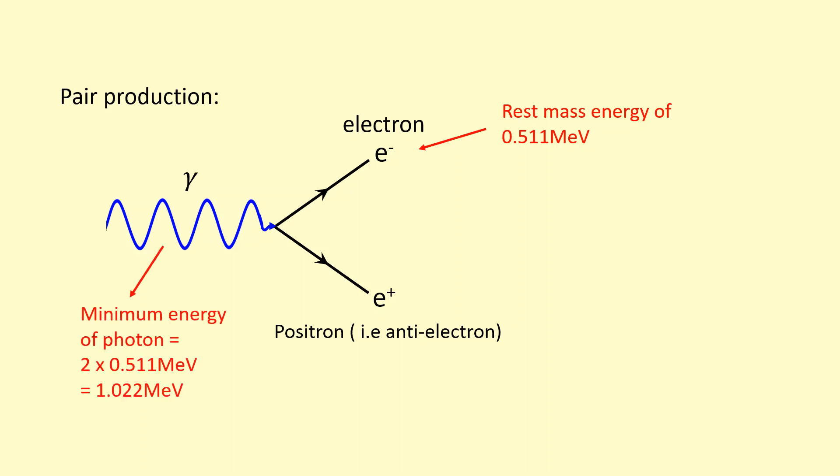So that means the gamma photon would have to have a minimum of 2 times 0.511 megaelectronvolts. So it'll have to have 1.022 megaelectronvolts as a minimum.